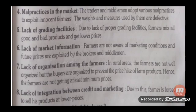Fifth defect: Lack of grading facilities. Due to the lack of proper grading facilities, farmers mix all good and bad products together and get lower prices, because there is no system to sell good quality goods at higher prices and lower quality goods at separate prices.